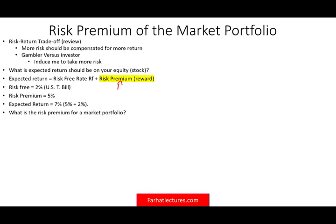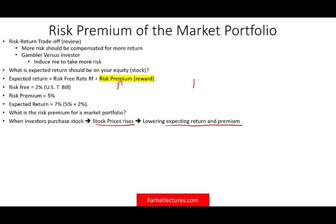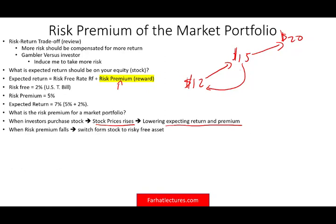When investors purchase stocks, the stock price generally rises. As the stock price rises, you lower your expected return and premium. If you bought the stock at $12 and people kept buying and now it's at $15, if you buy it at $15, you should expect a lower return than people who bought it at $12, because the stock price already went higher. If somebody waited and bought it at $20, they would expect even less premium. As a result, once it gets to $20, fewer people start to buy it and the risk premium falls. As the stock price goes up, you lower your expected return and the risk premium starts to fall.